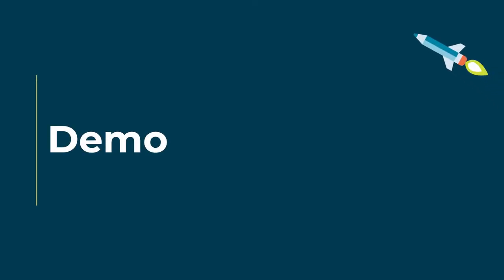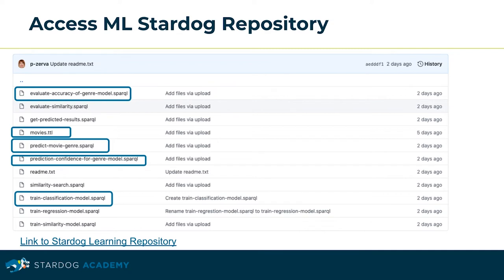With this in mind, let's demo building our first classification model. Information about the data and code executables can be found in the link below as provided by the training on the Stardog Learning Git repository. Before digging into details of how to train this first classification model, let's first load the movies data into Stardog — found under the Stardog Learning Git repo in the machine learning training folder — the movies turtle file.